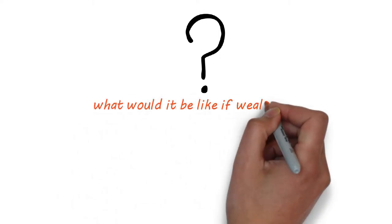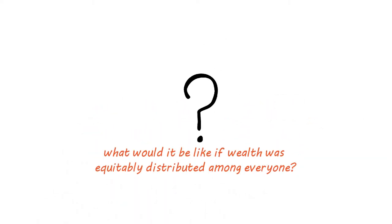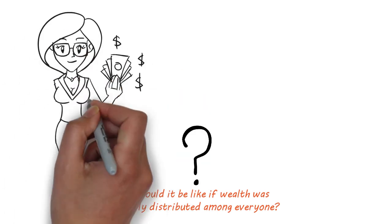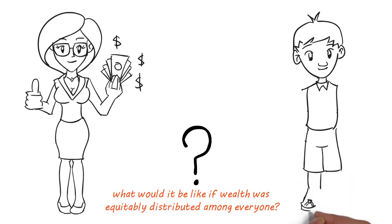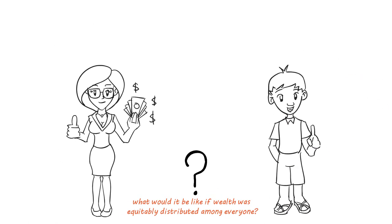So to revert back to our original question what would it be if wealth was equitably distributed among everyone? It would be temporary. All we would manage to do is sacrifice long-run stability at the altar of short-term gratification.